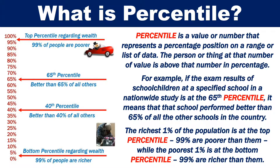For example, if the exam results of school children at a specified school in a nationwide study is at the 65th percentile, it means that the school performed better than 65% of all the other schools in the country.